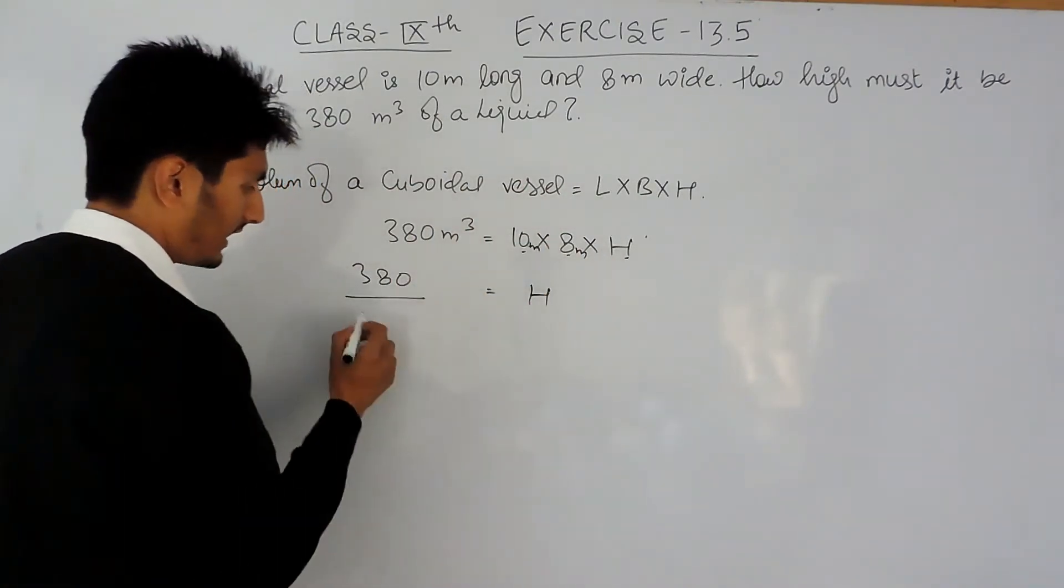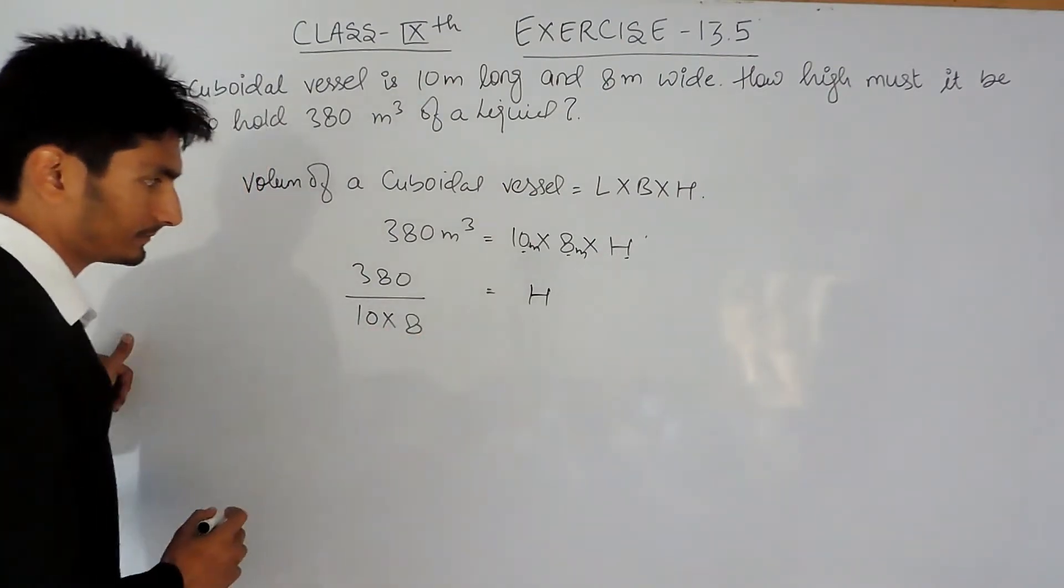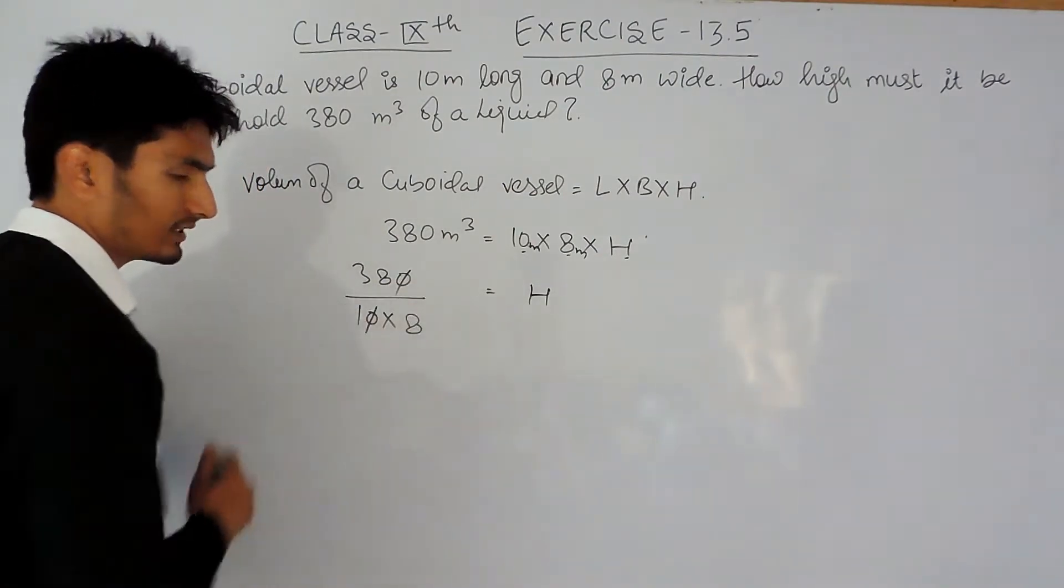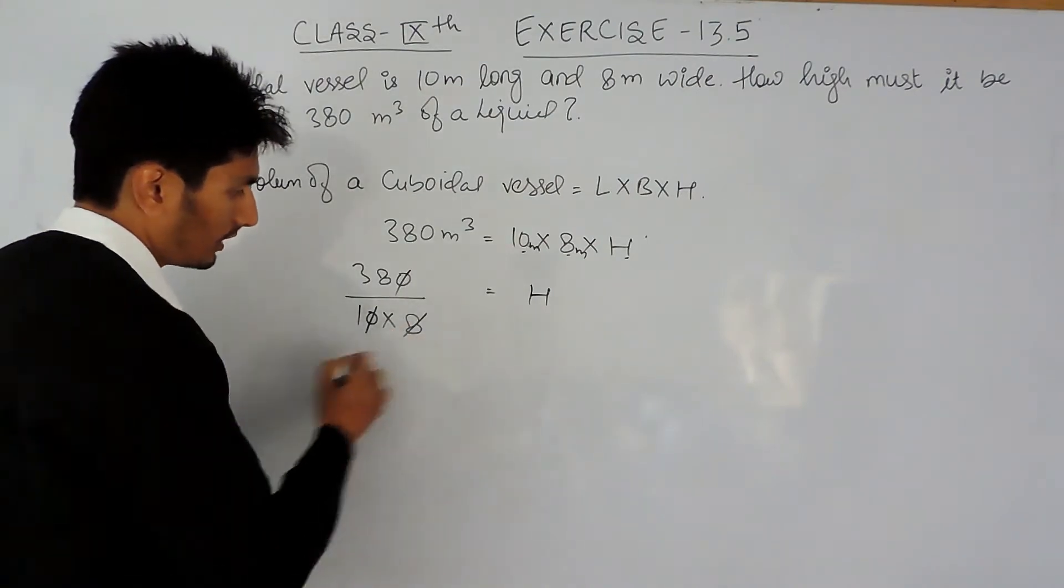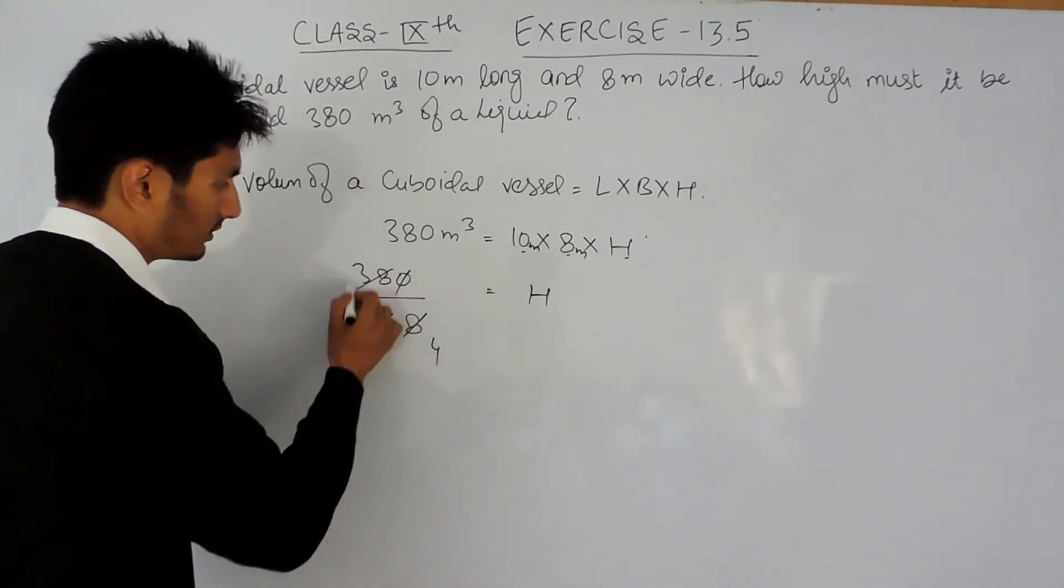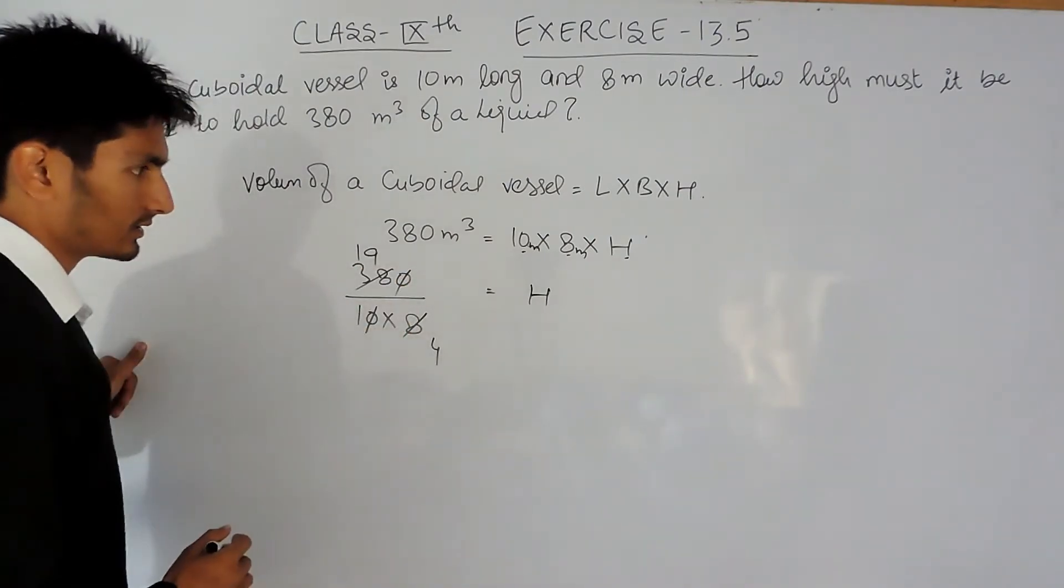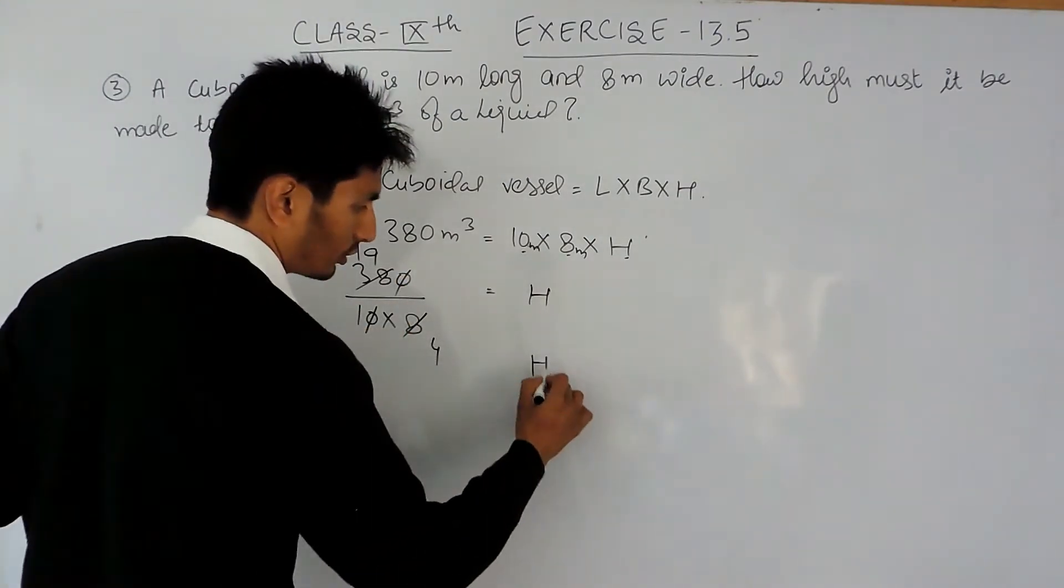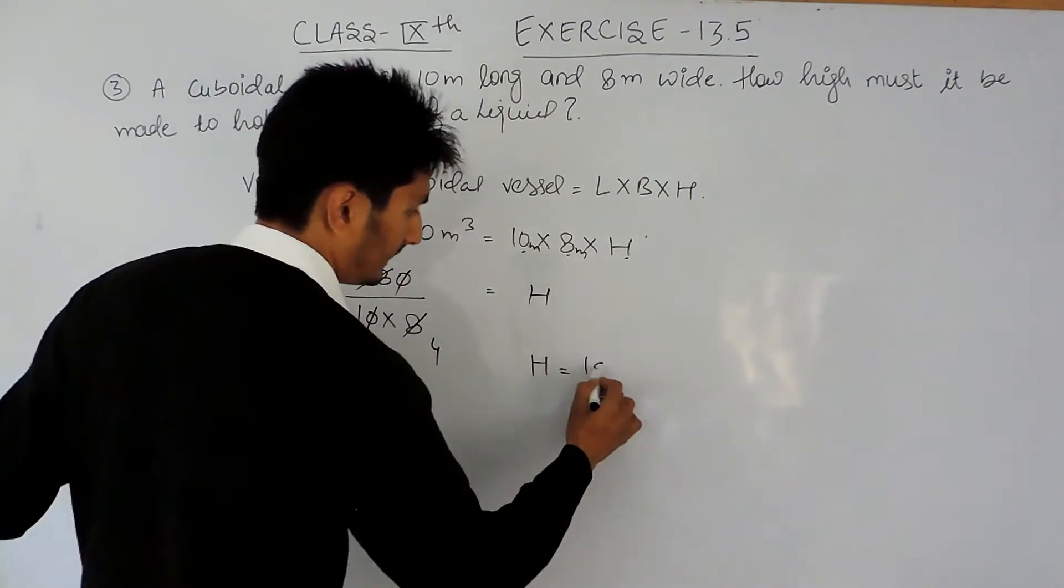Now this can be cancelled with 2, this is 4 times. Further solving this, it is 19 upon 4, which is 19 divided by 4.